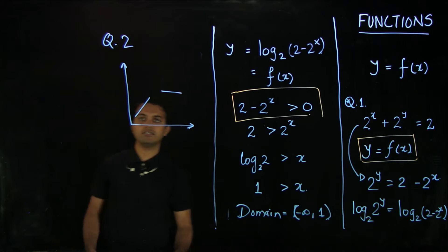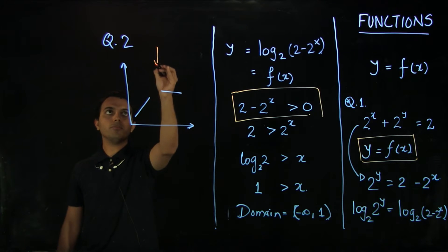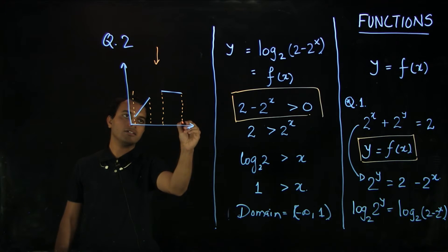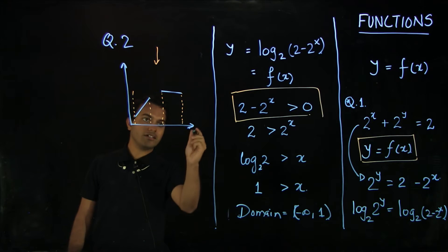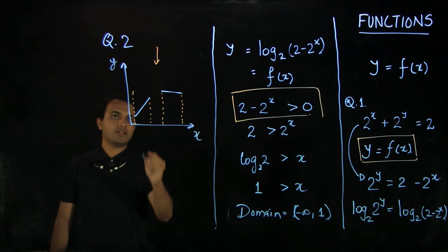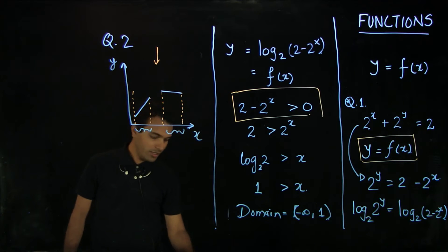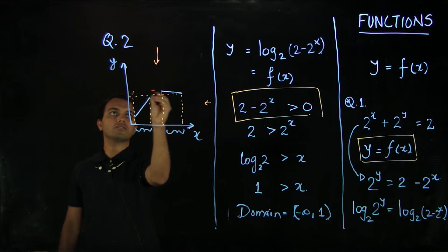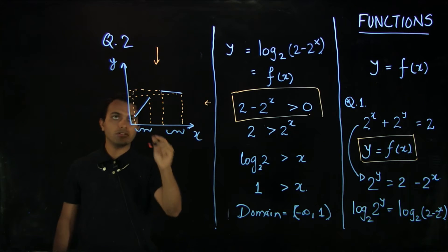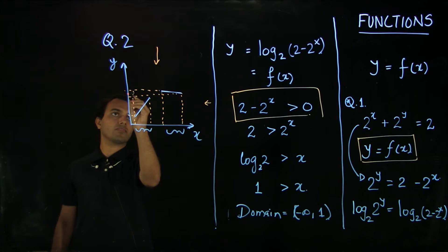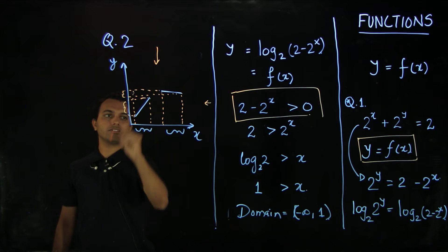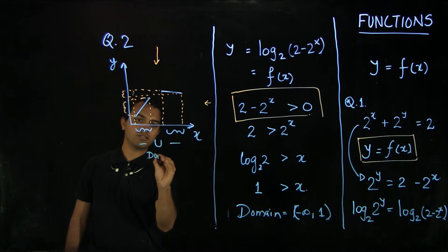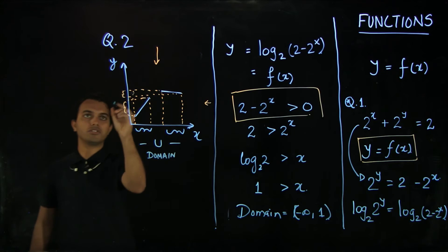There is a very easy trick. In order to figure out the domain, look at the graph from the top and project the graph onto the x-axis. Whatever set you find on the x-axis is the domain. Similarly, if you project along the other direction onto the y-axis, whatever you find there is the range. The union of the projected regions gives us the domain, and similarly for the range.